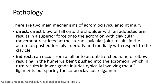Indirect: can occur from a fall onto a straight hand or elbow, resulting in the humerus being pushed into the acromion, which in turn results in lower-grade injury, typically involving the AC ligament but sparing the coracoclavicular ligament.